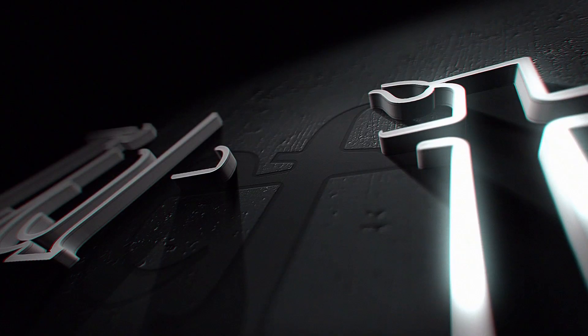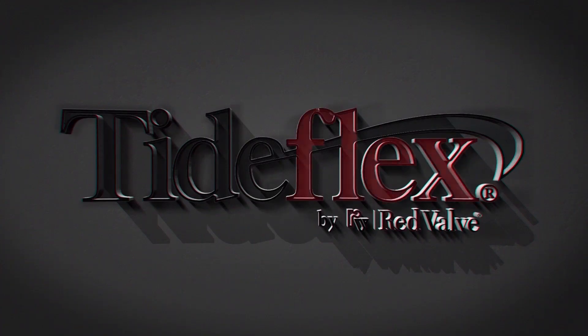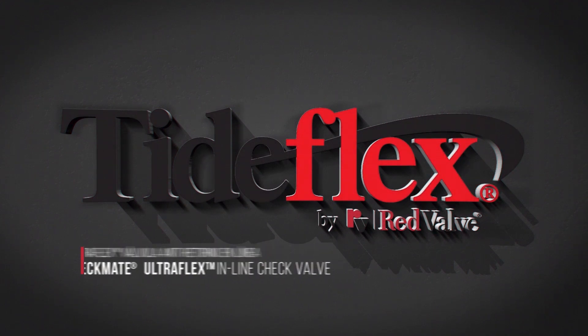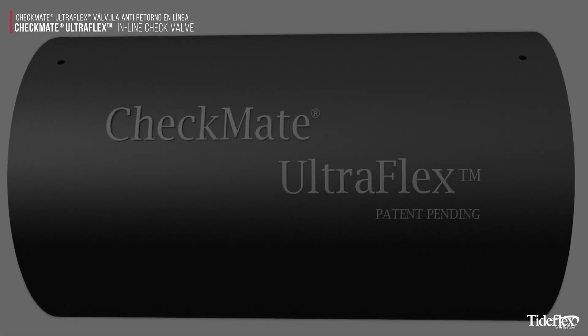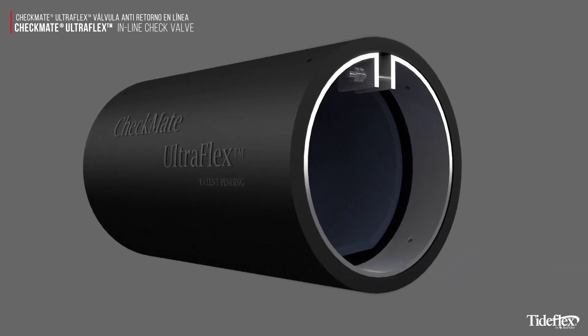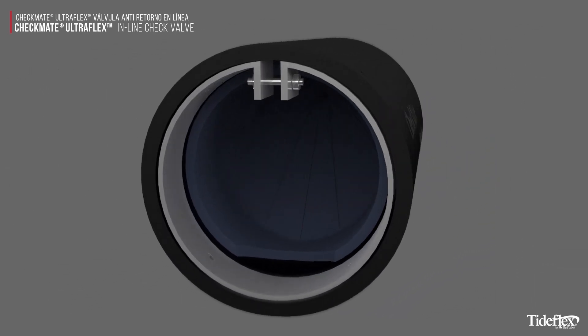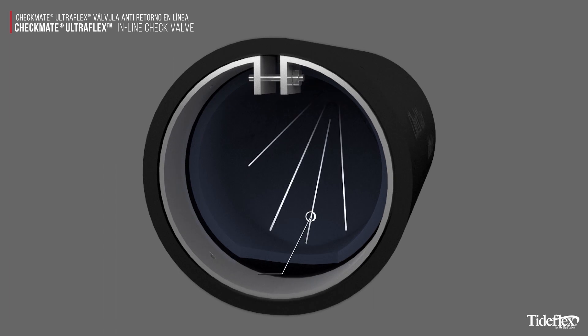From the world leader in backflow prevention comes the Checkmate UltraFlex inline check valve. For industrial and municipal applications such as stormwater, wastewater, highway runoff, CSO, SSO, and flood control, the Checkmate prevents unwanted backflow that can cause surges and flooding.